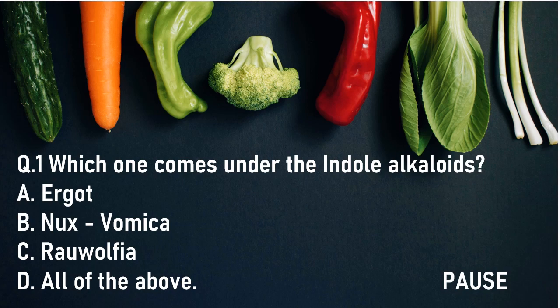Question 1: Which one comes under the indoor alkaloids? Option A, Ergot. Option B, Nux Vomica. Option C, Rauwolfia. And option D, all of the above. And the right answer is all of the above.